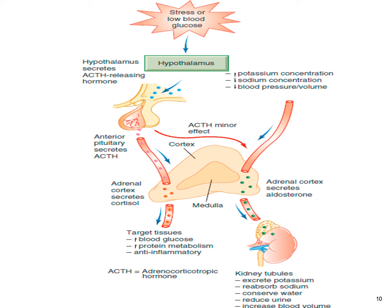Glucocorticoids are essential to metabolic systems for proper use of carbohydrates, proteins, and fats. The primary glucocorticoid is cortisol or hydrocortisone. Cortisol increases glucose levels in the blood and also helps counteract the inflammatory response. Aldosterone and cortisol are controlled by the adrenocorticotropic hormone (ACTH), the releasing hormone from the hypothalamus, and ACTH is secreted by the anterior pituitary.